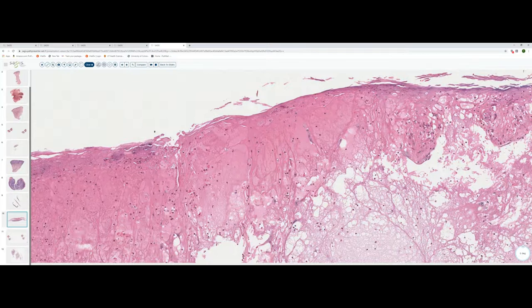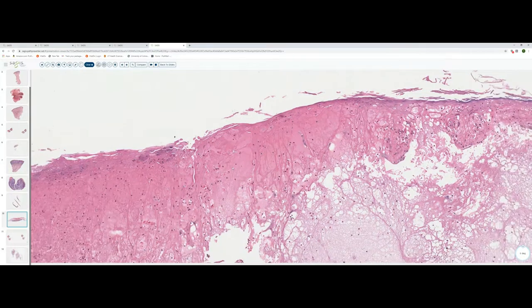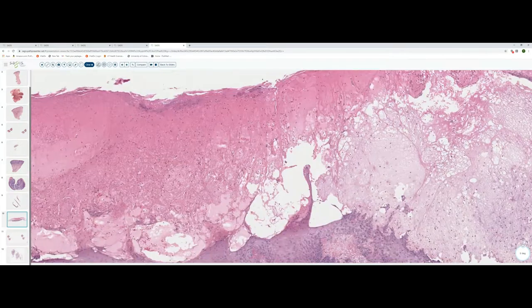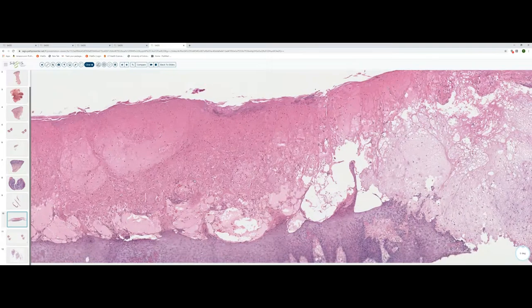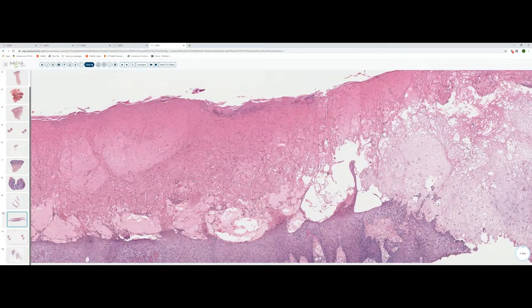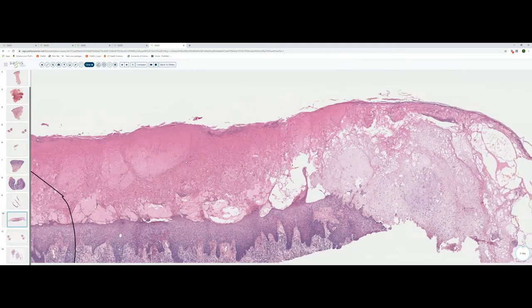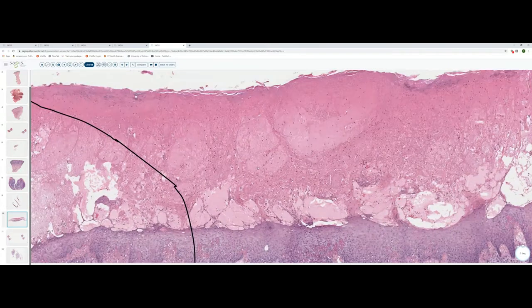And while there may be some spongiosis here, I think it's pretty obvious that this blister has mainly formed as the consequence of ballooning. These keratinocytes have accumulated so much intracellular edema that they just exploded. The nuclei are gone. These cells are necrotic. And we're getting a coalescence of cell membranes to form this reticular network. This is reticular alteration. And when you see extensive ballooning like this, two broad categories that you want to think of are nutritional deficiency disorders. I've never seen this much ballooning in a nutritional deficiency disorder.